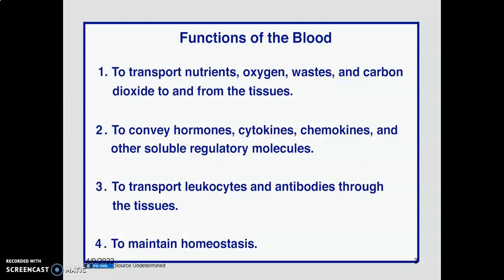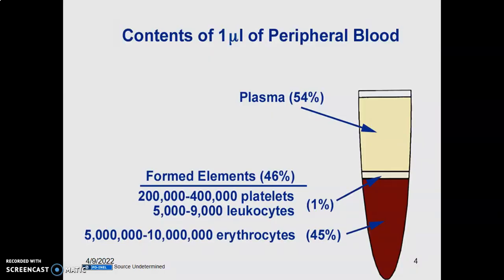What are the functions of blood? It helps to transport nutrients, oxygen, wastes, and carbon dioxide to and from the tissue. Blood also conveys hormones to target organs. The cytokines and chemokines produced by immune cells are moved throughout the body, along with other soluble regulatory molecules. Blood also transports leukocytes and antibodies through the tissue to ensure proper immune protection and to maintain homeostasis.